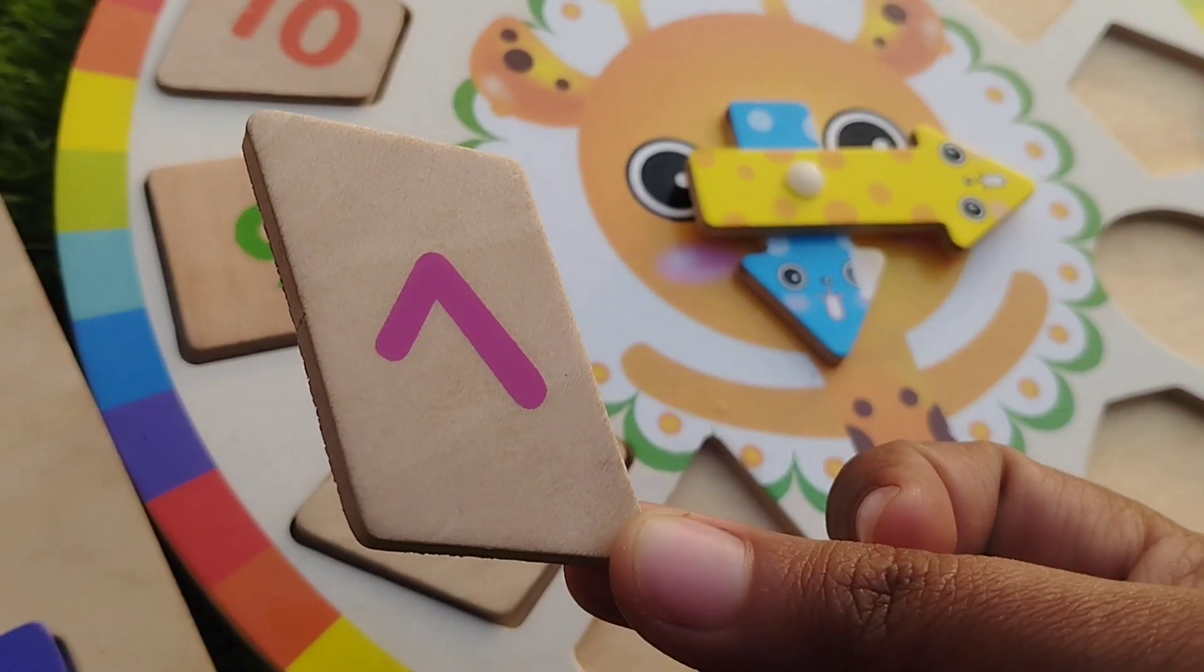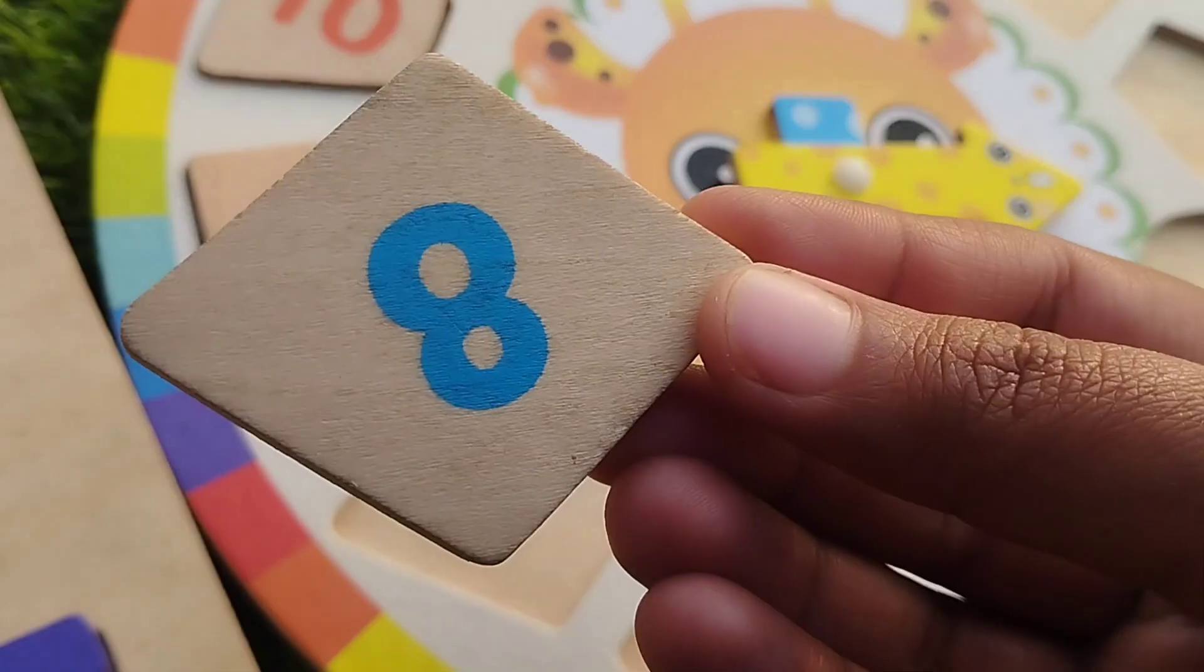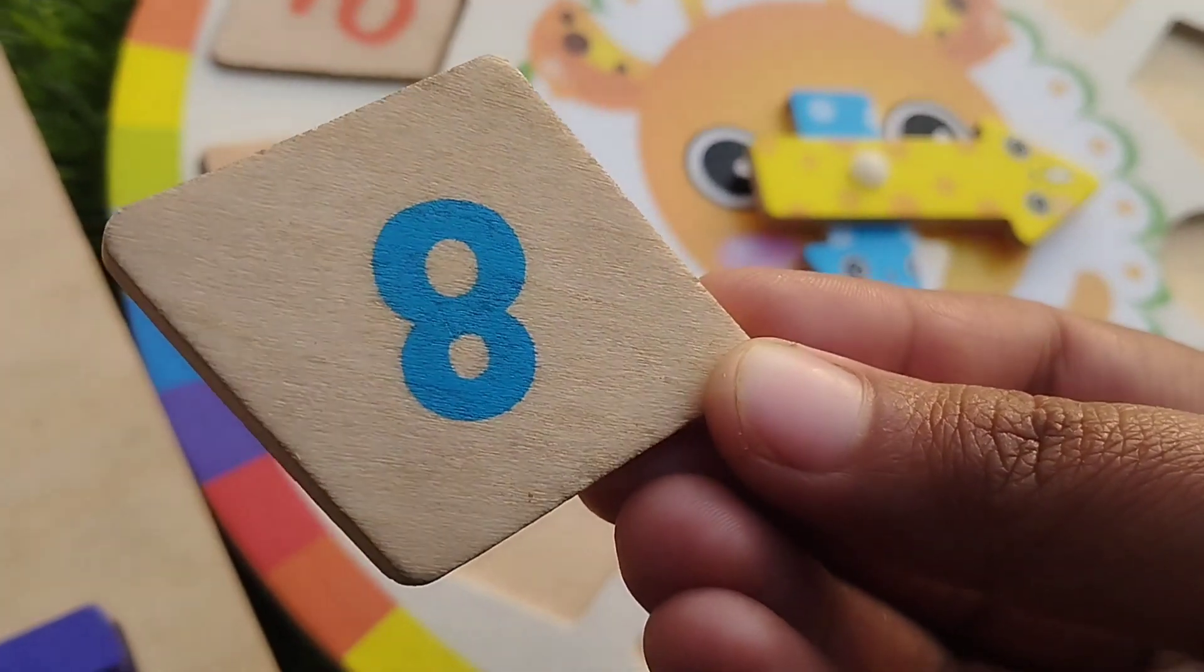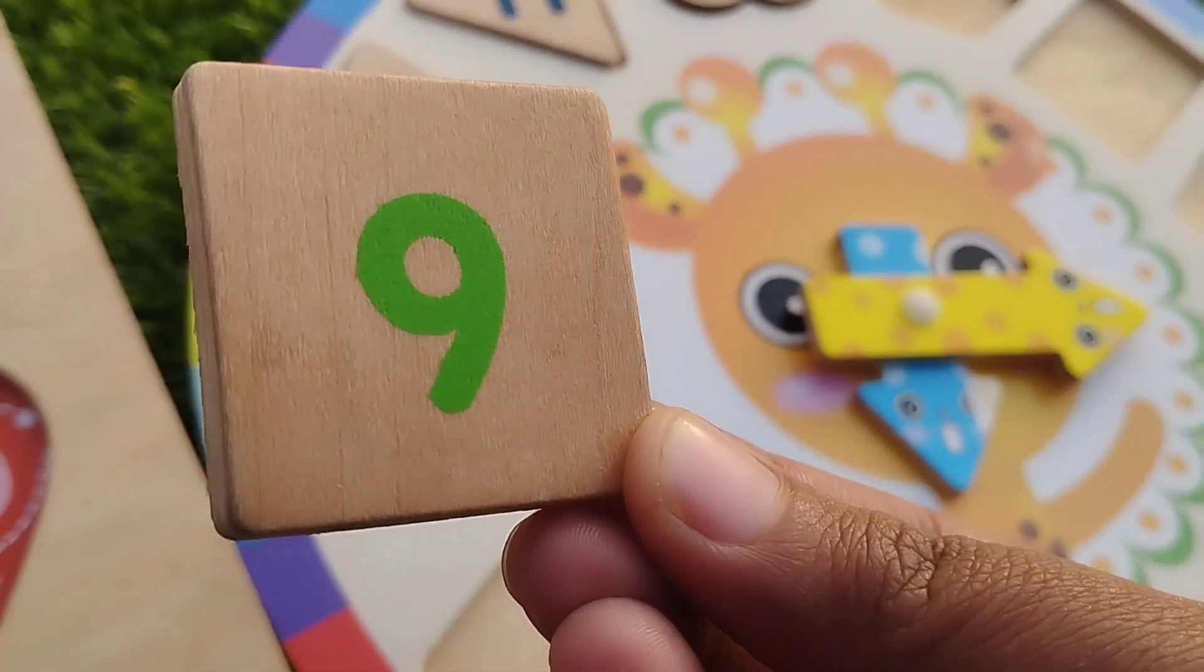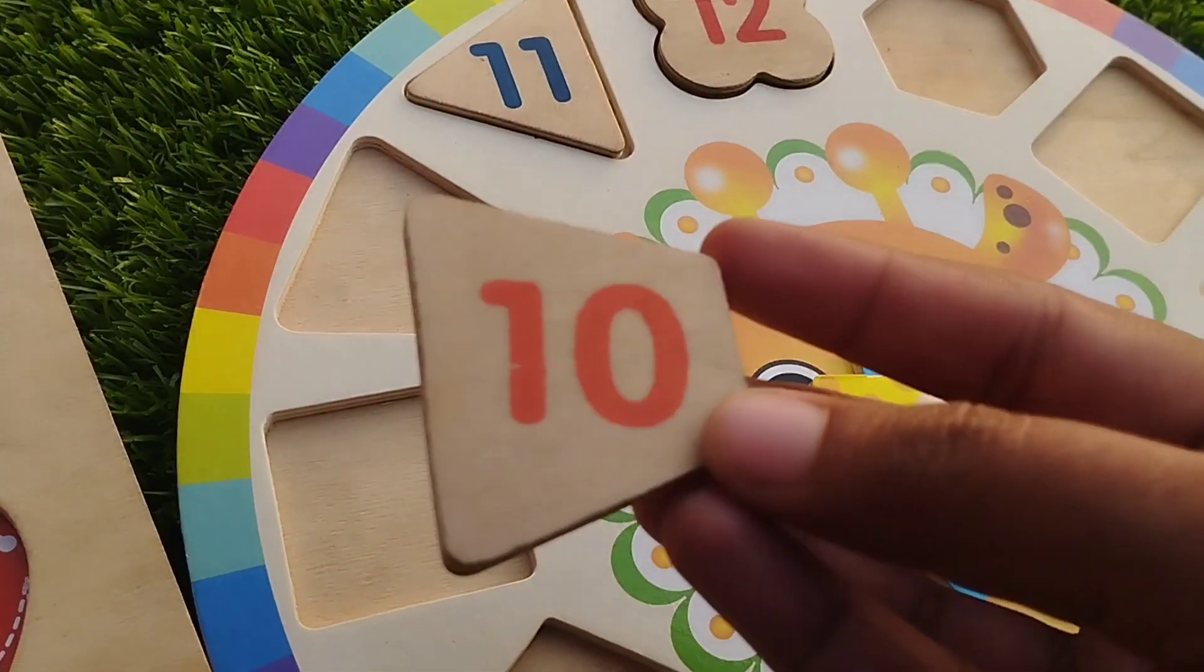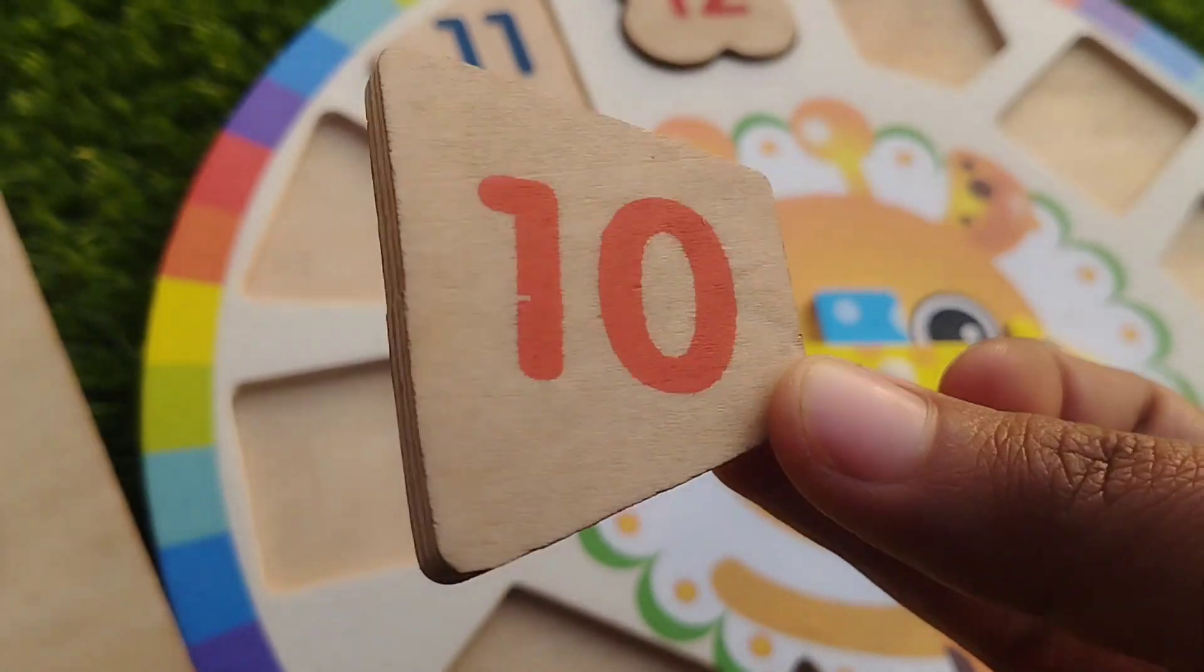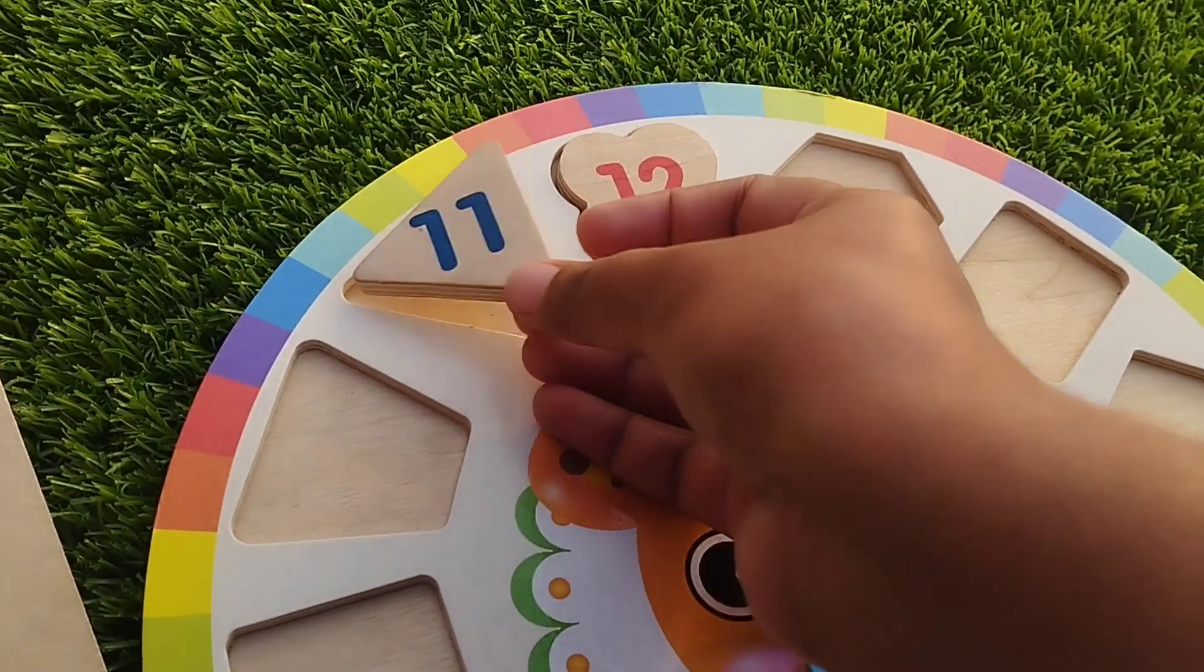Rhombus. This is rhombus shape. Diamond. This is diamond. 16. Square. This is square shape. 16. The next shape is triangle. 17. Triangle.